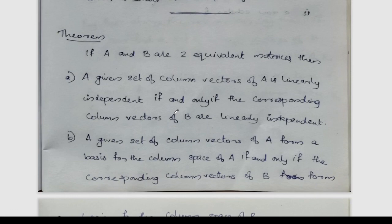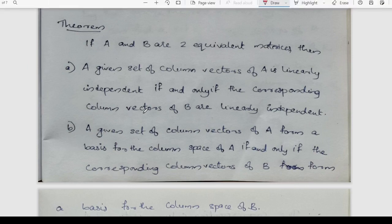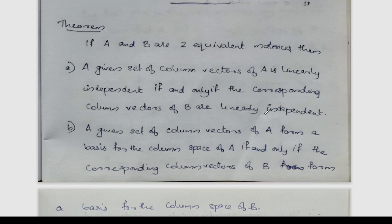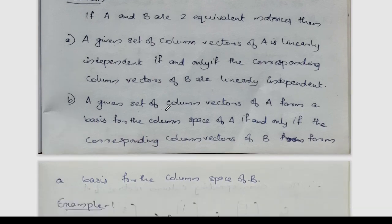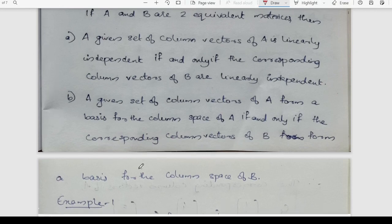If A and B are row equivalent, the column vectors of A are linearly independent if and only if the corresponding column vectors of B are linearly independent. So a set of column vectors of A that forms a basis for the column space of A corresponds to the column vectors of B that form a basis for the column space of B.